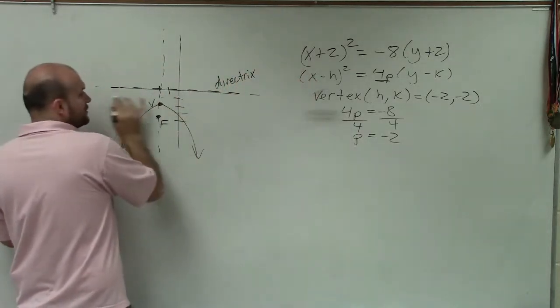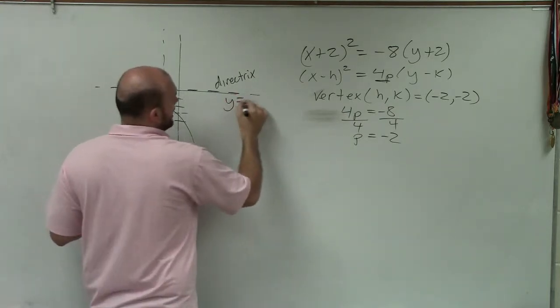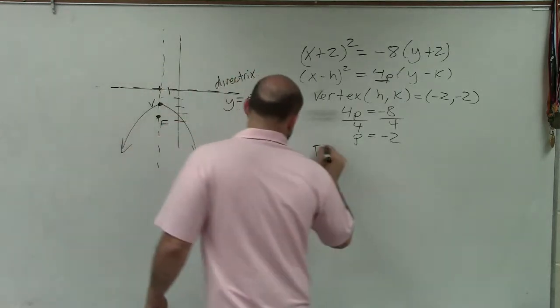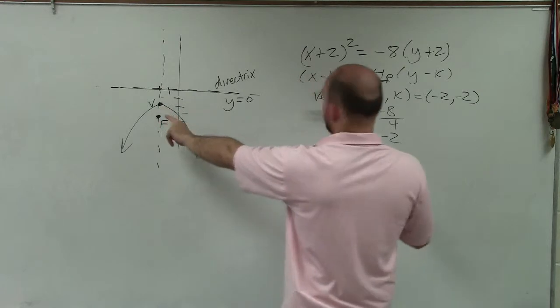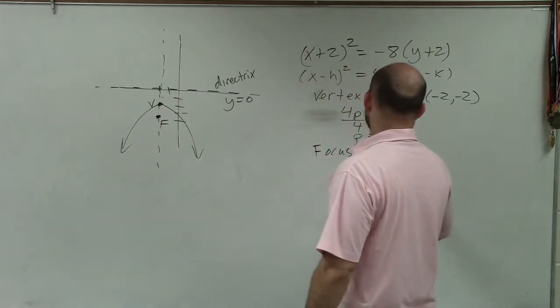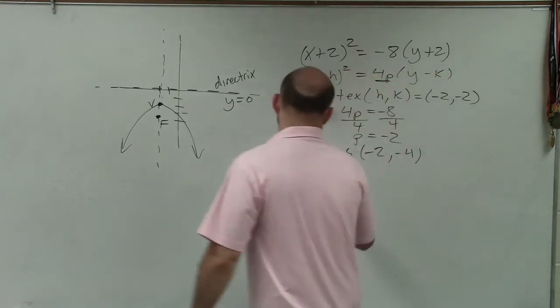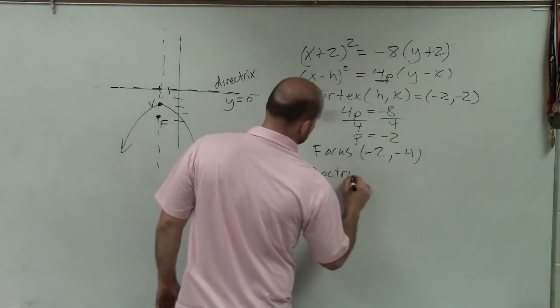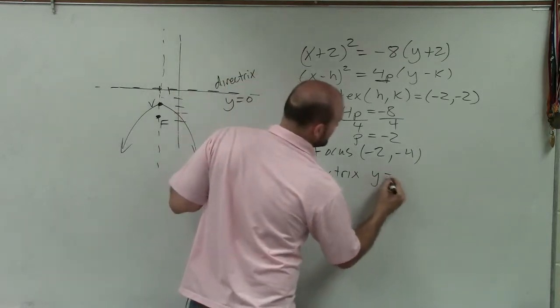And since that perpendicular line you can see is on the x-axis, so we could say, since it's horizontal, we can say y equals 0. So let's go ahead and write this up. So the focus, notice the focus has the same x-coordinate as the vertex, which is -2. However, it's two more units down, so it should be -4. And our directrix is the line y equals 0.